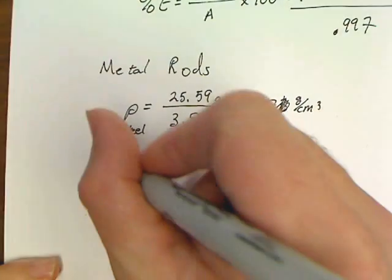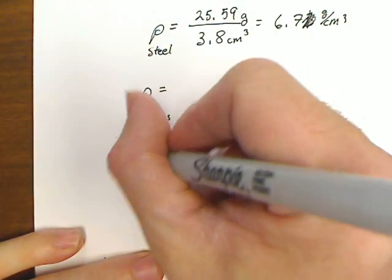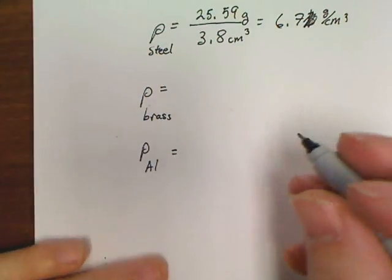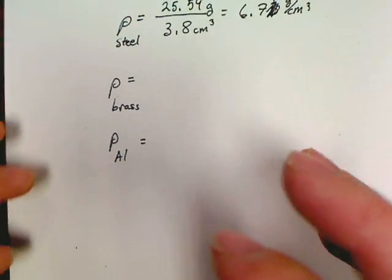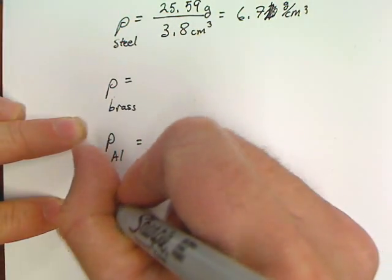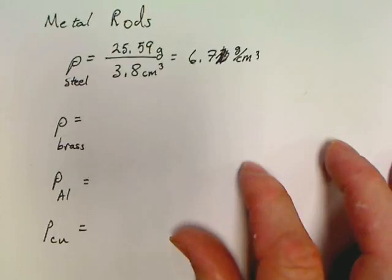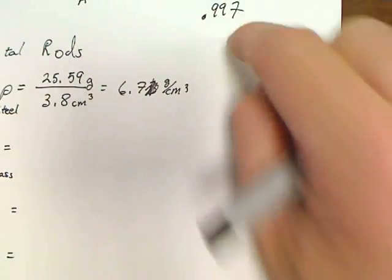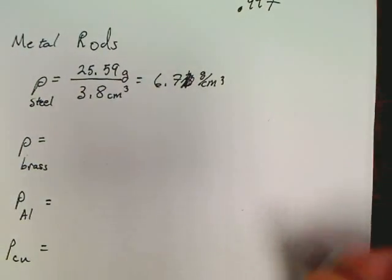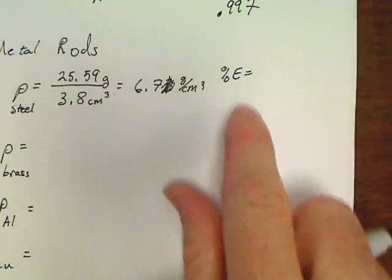I should not have made that big bloppy spot right there, but that's my bad. So there's one calculation. Now you should continue, and you should have on the back of your page one of these for brass, one of these calculations for aluminum, and you should also have one of these calculations for copper. You should have four of these calculations.